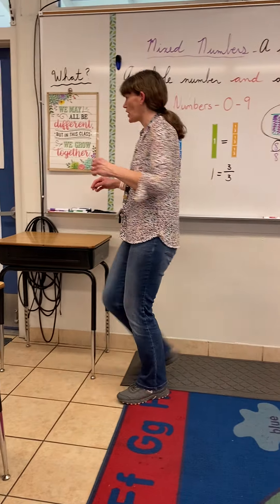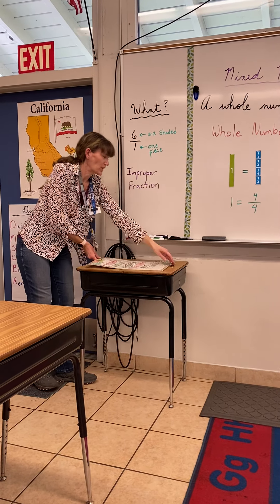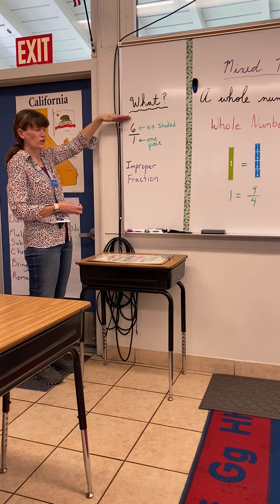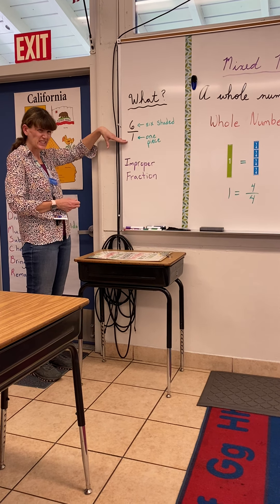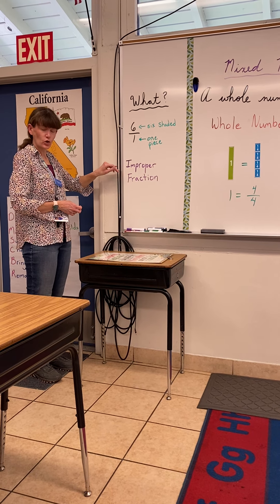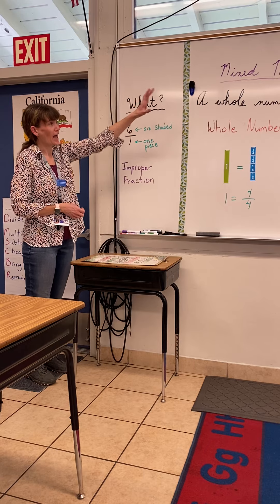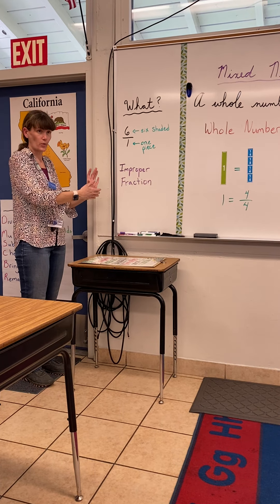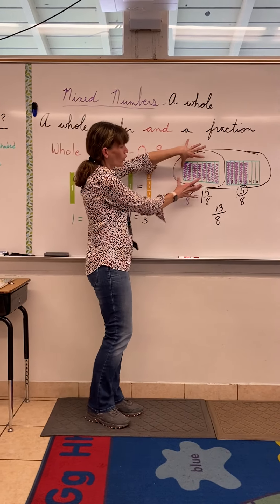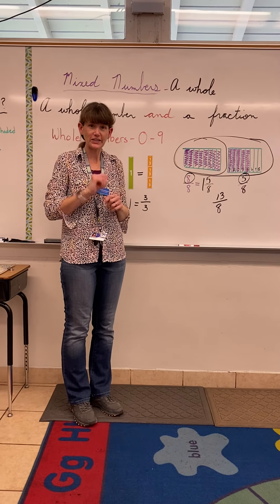Now, if you saw something where we're getting more numbers shaded than we actually have pieces, these are called improper fractions. That's going to be our next couple of lessons — what you do with an improper fraction and how you move between a mixed number and an improper fraction. But for today, remember we're thinking about mixed numbers: whole numbers and fractions. All right, I'll see you later for the next lesson. Bye.